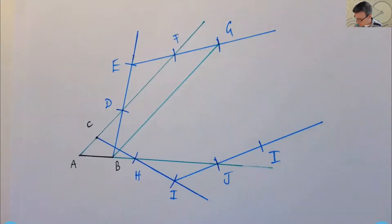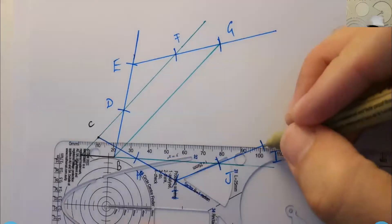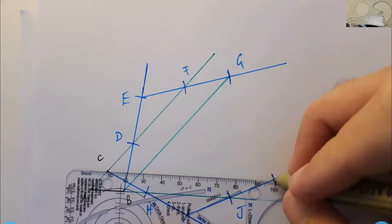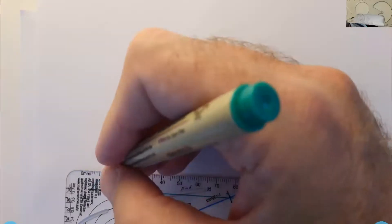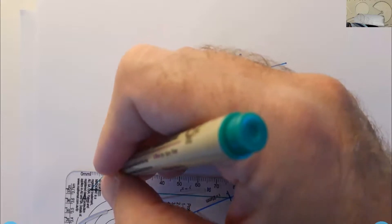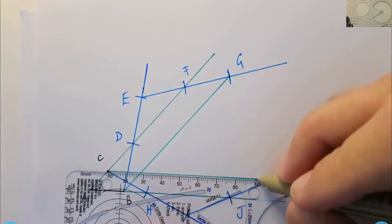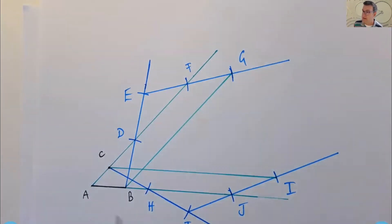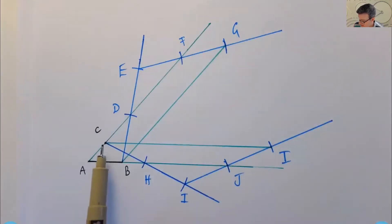So I'm going to use my straight edge. Okay. So now you can see the line segment CI is parallel to AB.